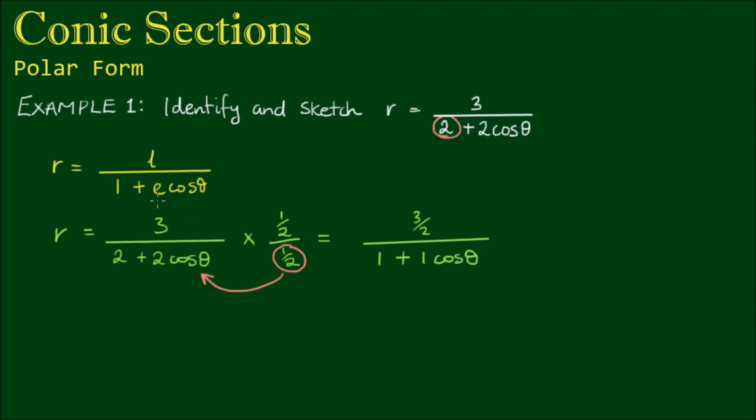Alright, so we can see here now that the eccentricity E is equal to 1. So what this means is we have a conic section with an eccentricity of 1. And which conic has this property? It's of course a parabola.